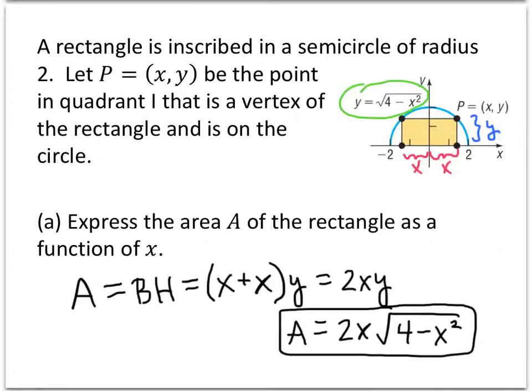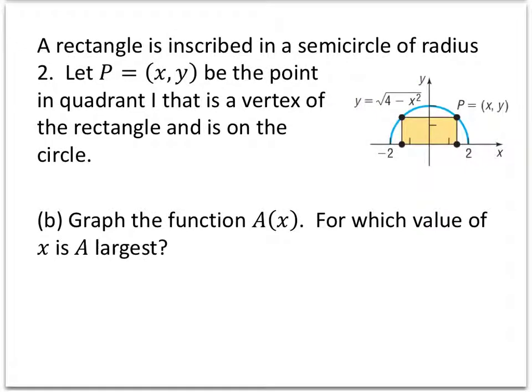Okay. Now there's a second part to this problem. In part b, they want us to graph the function a of x, and for which value of x is a largest. So remember from the previous slide that we've already got our formula, and it's a equals 2 times x times the square root of 4 minus x squared.